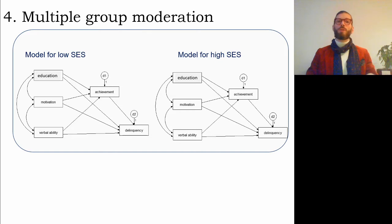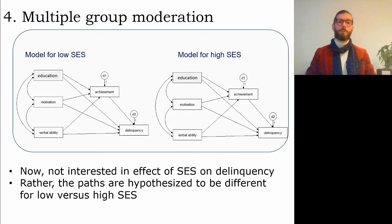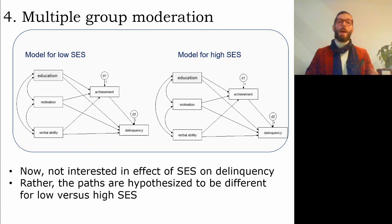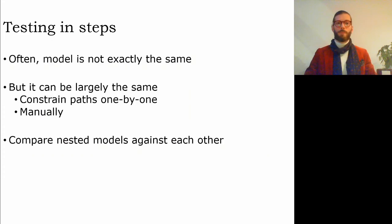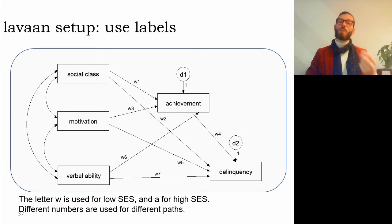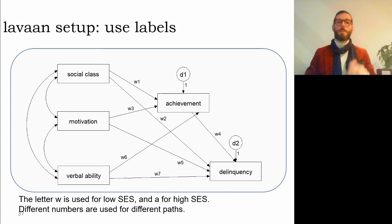For the more complicated model with multiple group moderation, we have a model for low SES on the left and a model for high SES on the right. Many paths are hypothesized to be different for low versus high SES individuals. In lavaan, we use labels to estimate different values for each group — using W for low SES and A for high SES — giving unique estimates for all coefficients in both groups.